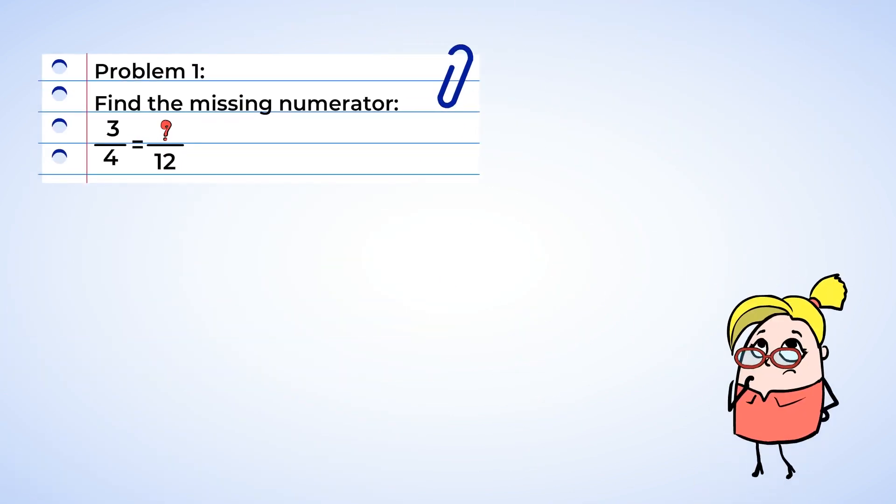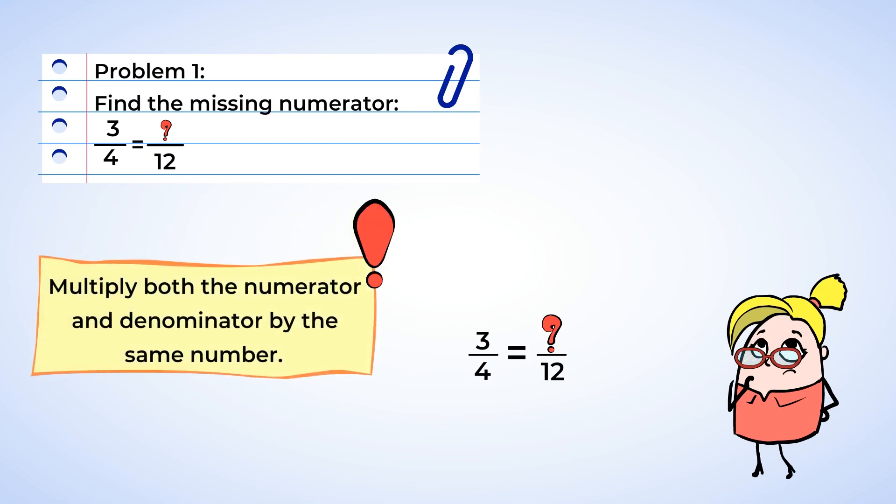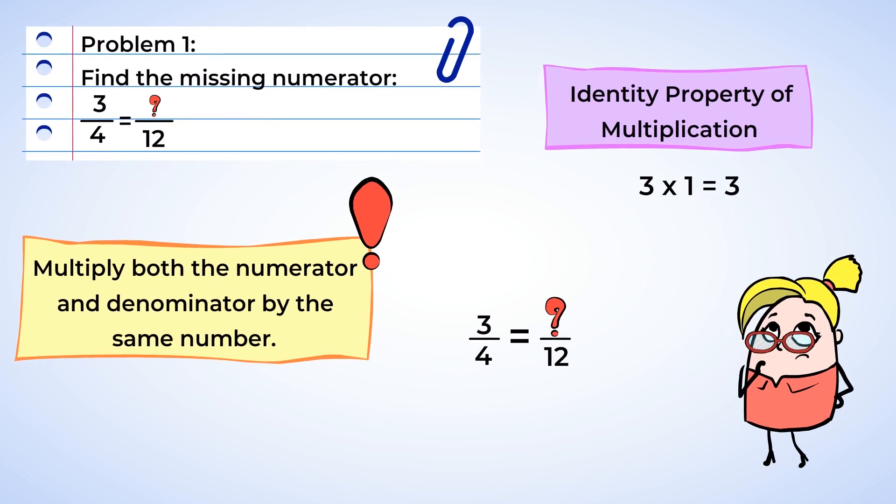Find the missing numerator. Okay, looks like we have to find the missing numerator. Now the key with creating equivalent fractions is to multiply both the numerator and denominator by the same number. That's because the identity property of multiplication lets us change the numbers of a fraction without changing the actual value. Remember that anything times one is itself, right? So, looking at the denominators, what did we multiply four by to get twelve? Well, four times three is twelve, so it's three. Whatever we do to the denominator, we need to do to the numerator. Three multiplied by three is nine, so that gives us nine twelfths. The missing value is nine.